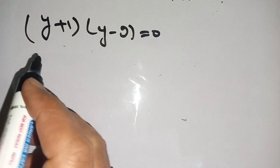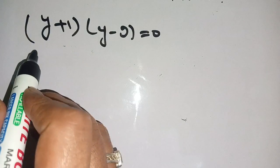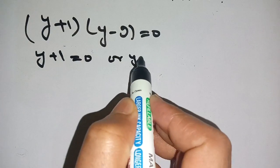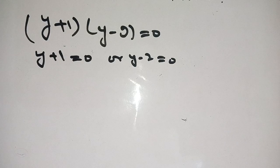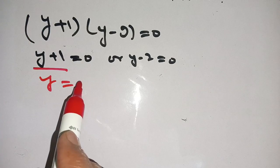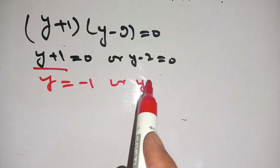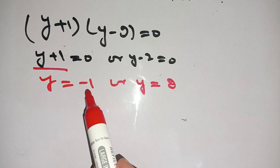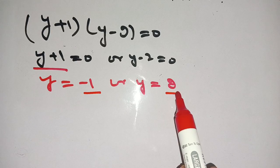On equating each term to 0, we get y plus 1 is equal to 0, or y minus 2 is equal to 0. From these terms, we get y is equal to minus 1, or y is equal to 2. There are two values of y: first value is minus 1 and second value is 2.